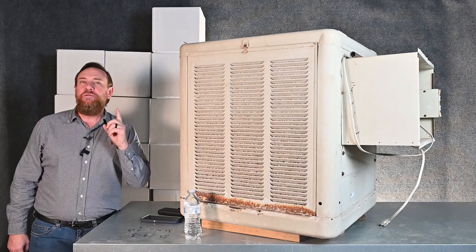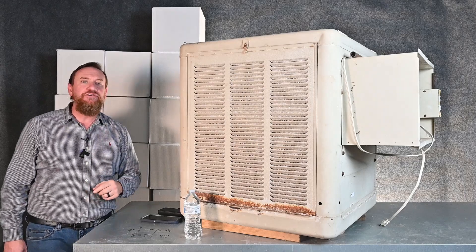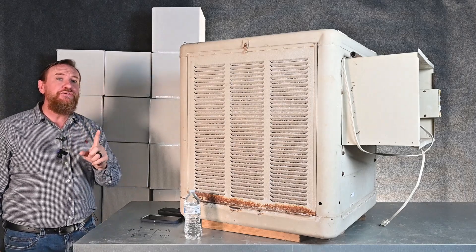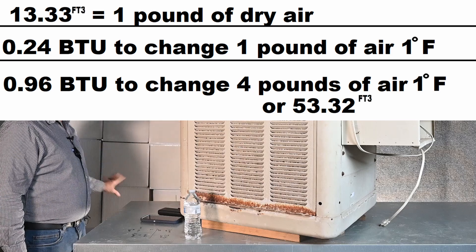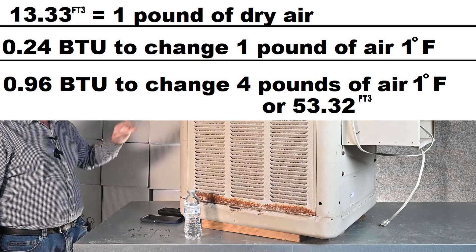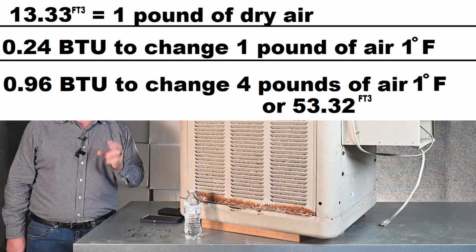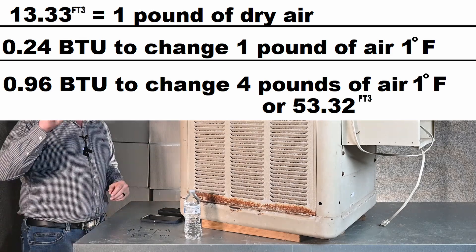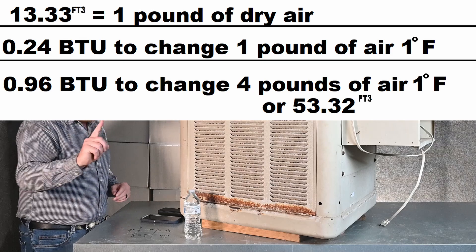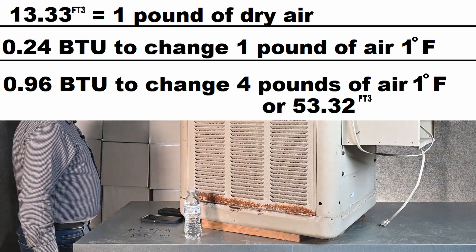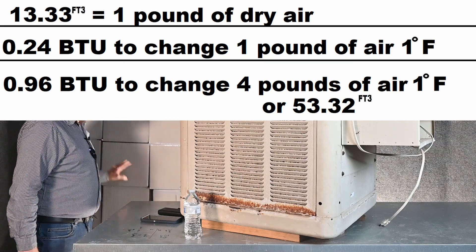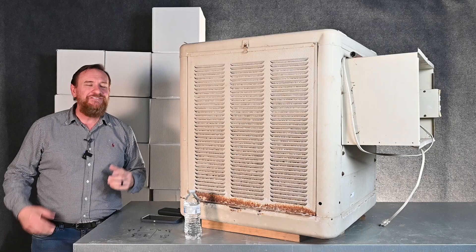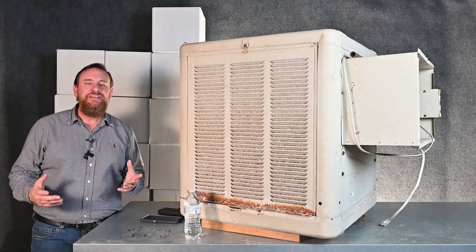Let's look at what 1 full BTU would do. If I had 1 full BTU, that would be 4 pounds of air — 4 times this much — it would also be 55 cubic feet of air. So only 1 BTU would change 55 cubic feet of air 1 degree Fahrenheit. It's quite impressive.